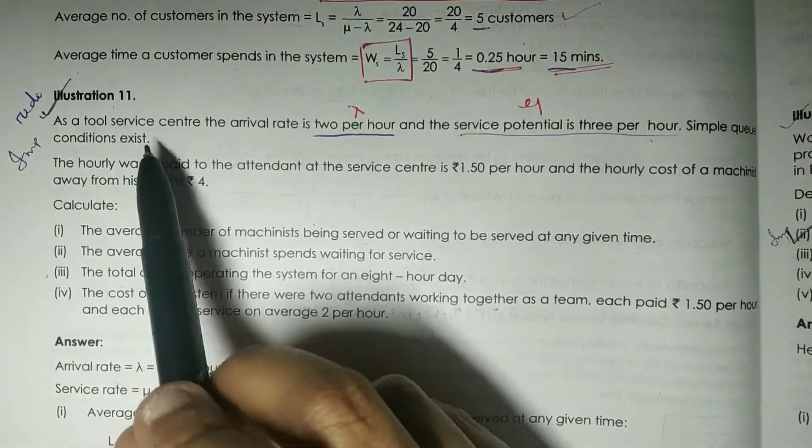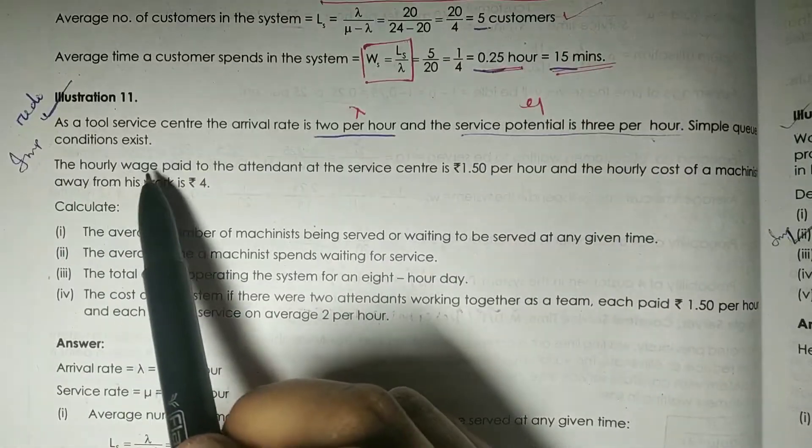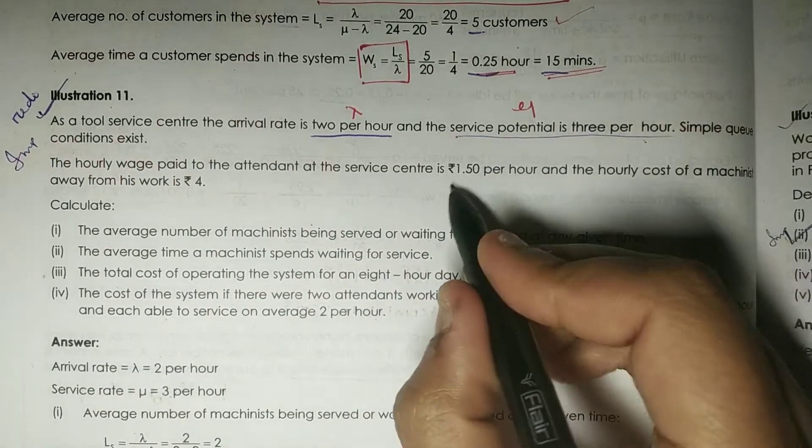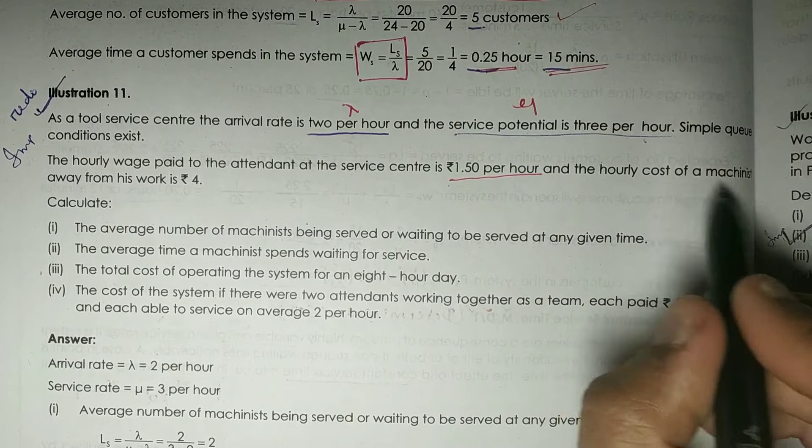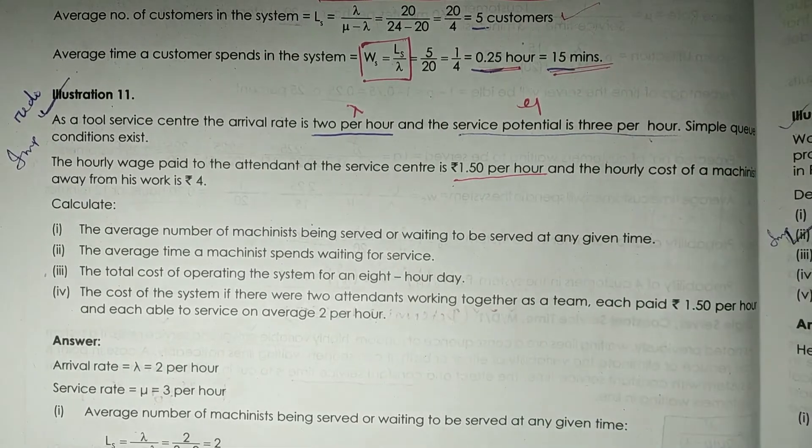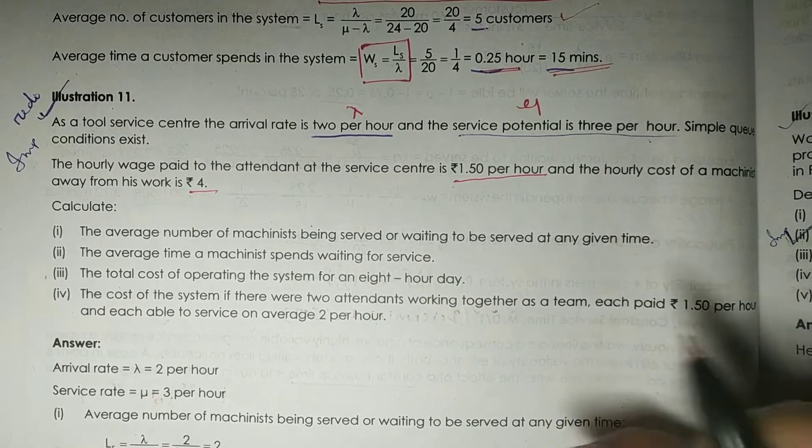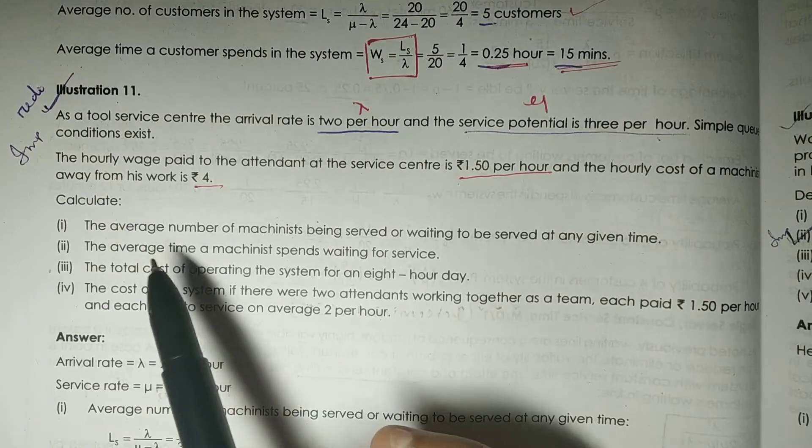Simple queue conditions exist. The hourly wage paid to the attendant at the service center is rupees 1.50 per hour, and the hourly cost of a machinist away from his work is rupees 4. So you have to calculate four things.